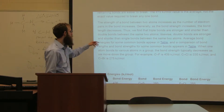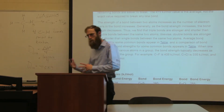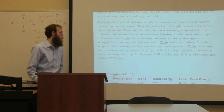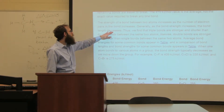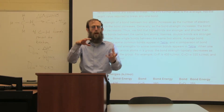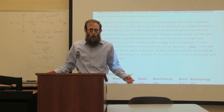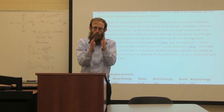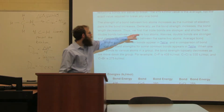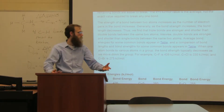How do we compare the strengths of covalent bonds? The strength of a bond between atoms increases as the number of electron pairs in the bond increases. A double bond is stronger than a single bond; a triple bond is stronger than a double bond. As bond strength increases, bond length decreases. Triple bonds are stronger and shorter; double bonds are stronger and shorter than single bonds; single bonds are the weakest and longest.